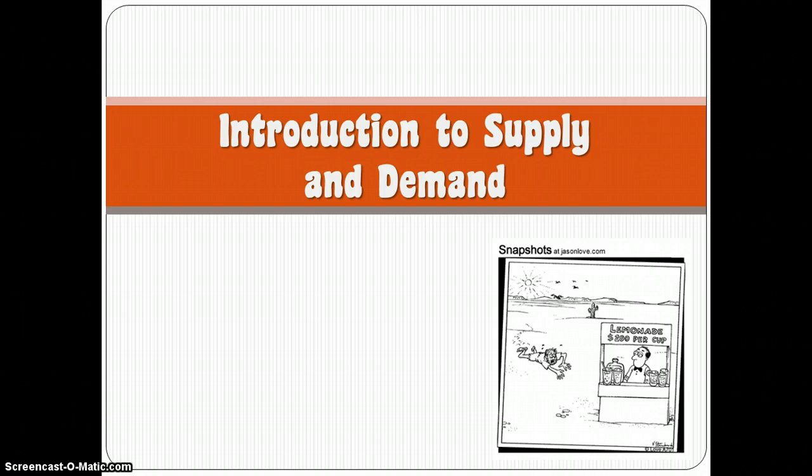We're going to start looking at the supply and demand model today as we move forward with microeconomics. You're going to find the information we talk about today in Chapter 3, titled Supply and Demand, pages 62 to 71, and there you're going to find information about the difference between a movement along the demand curve and a shift in the demand curve, the things that might cause the demand curve to shift.